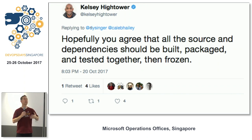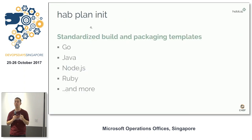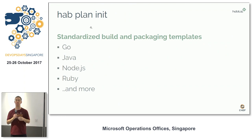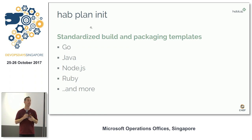So stepping back, we said, let's start a new project. What it does is it takes the source dependencies, builds and packages them, tests them, and produces immutable artifacts. It starts with a Habitat plan — that is how your application is built. It comes with scaffolding for standardized Go, Java, Node, and Ruby applications, so they're always built the same way.